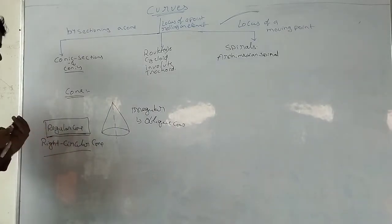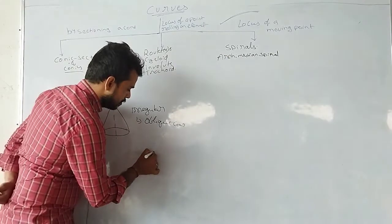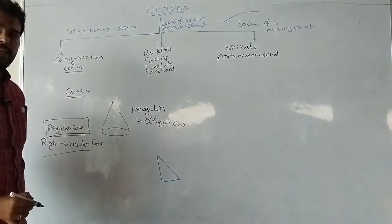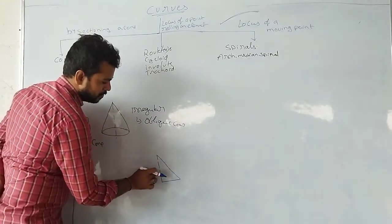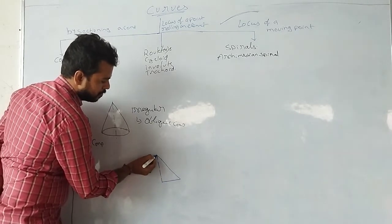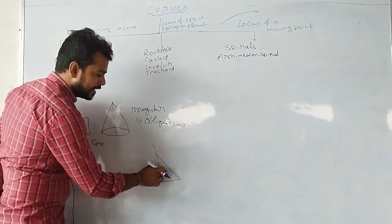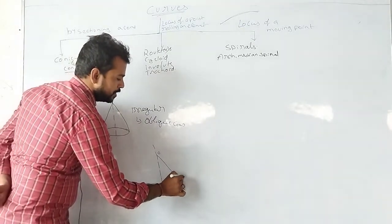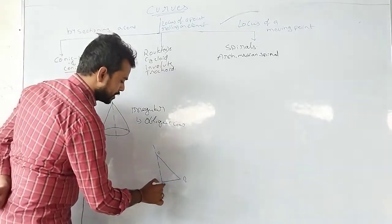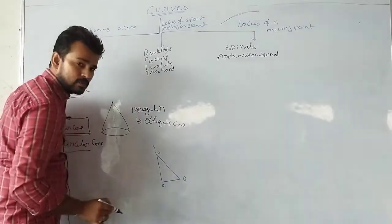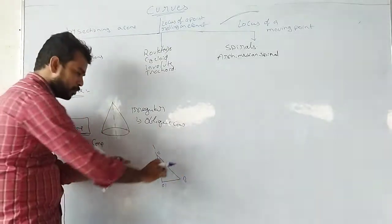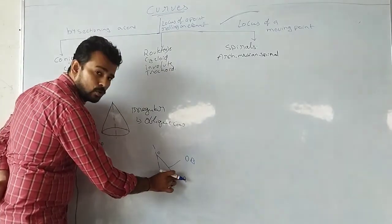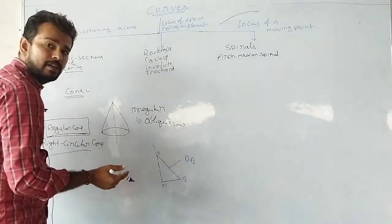A right circular cone is formed from a right-angle triangle. I fix one side of this right-angle triangle as the axis — this is O and this is B, and this is O dash. By fixing O and O dash, I rotate OB. The locus of this OB — by fixing O and O dash and rotating OB for one revolution — it will form a circular shape.